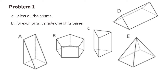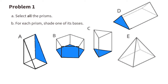Problem number 1. Part A: Select all the prisms. Part B: For each prism, shade one of its bases. Remember, prisms have two bases that are parallel to one another. The pyramid shape does not have two bases that are parallel to one another.